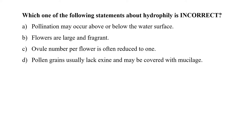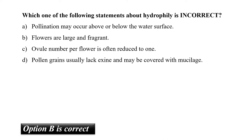The next question is: which one of the following statements about hydrophily is incorrect? Hydrophily is the mode of pollination through the agency of water. The main characteristics of hydrophilous flowers are that they are small, dull, and inconspicuous, with unwettable perianth and other floral parts. So option B, that flowers are large and fragrant, is the incorrect statement. So the correct answer is B.